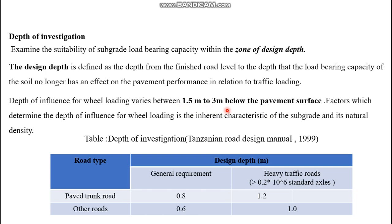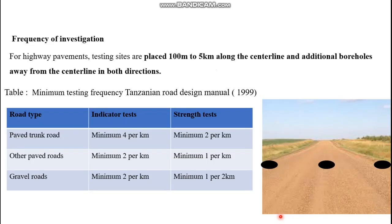Different manuals recommend different investigation design depths. For instance, the Tanzanian Road Design Manual recommends a depth of 80 centimeters for general requirements. For heavy traffic loads, it can extend to 1.2 meters for paved trunk roads, and for other roads it can be up to 1 meter.